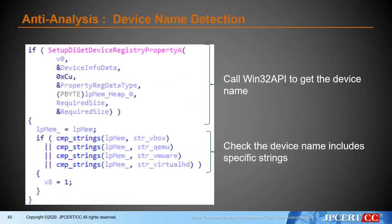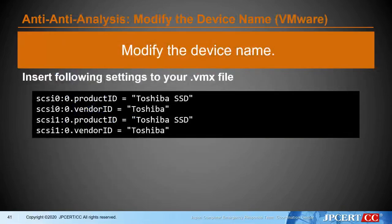Let's check another anti-analysis technique. Here, malware calls a Windows API to check the device name. If the device name includes 'VBox' or 'VMware', the malware will kill itself. It is possible to bypass this by hooking the API, but it is easier to modify the virtual machine settings. As you can see, you can also change the device name by writing just a few lines into the configuration file. You can do the same for MAC address, CD drive name, BIOS settings, etc.